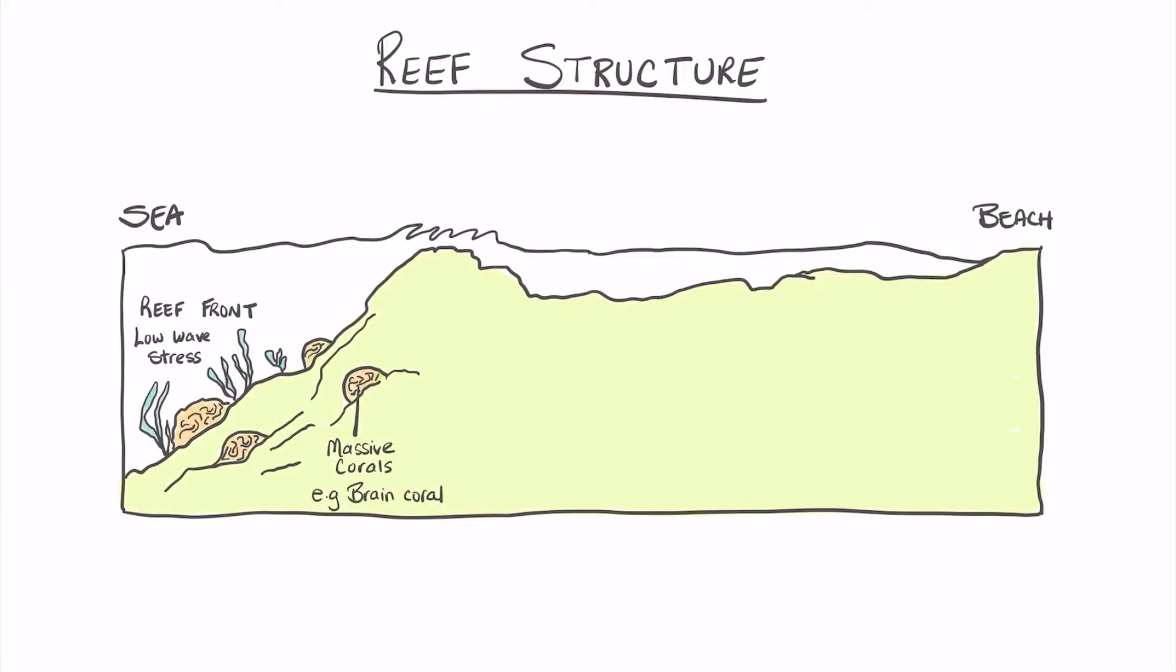As we move further up we encounter the reef crest which can sometimes protrude out of the water. Now this area has very high wave stress and so the corals that grow here are usually branching corals like the alcon coral which can diffuse some of that strong wave action.